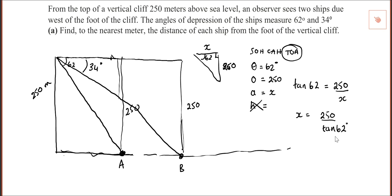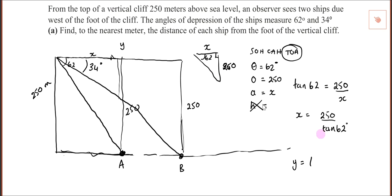The other ship is just the same thing. For the longer distance, call it y — I don't even need to redo this. It's just going to be 250 divided by tan of 34 degrees.